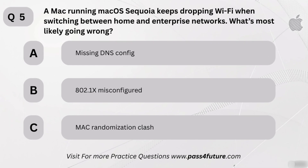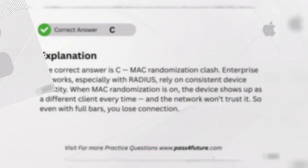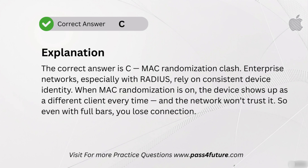Here's a network one. A Mac running macOS Sequoia keeps dropping Wi-Fi when switching between home and enterprise networks. What's most likely going wrong? A. Missing DNS config. B. 802.1x misconfigured. C. MAC randomization clash. The correct answer is C — MAC randomization clash. Enterprise networks, especially with RADIUS, rely on consistent device identity. When MAC randomization is on, the device shows up as a different client every time, and the network won't trust it. So even with full bars, you lose connection.